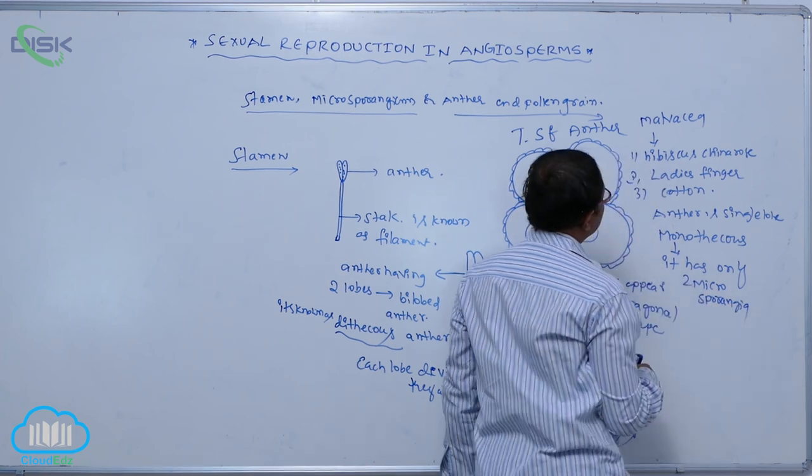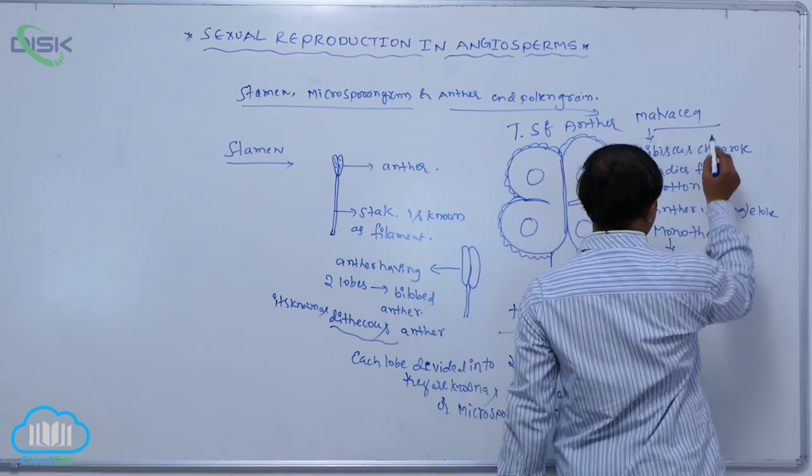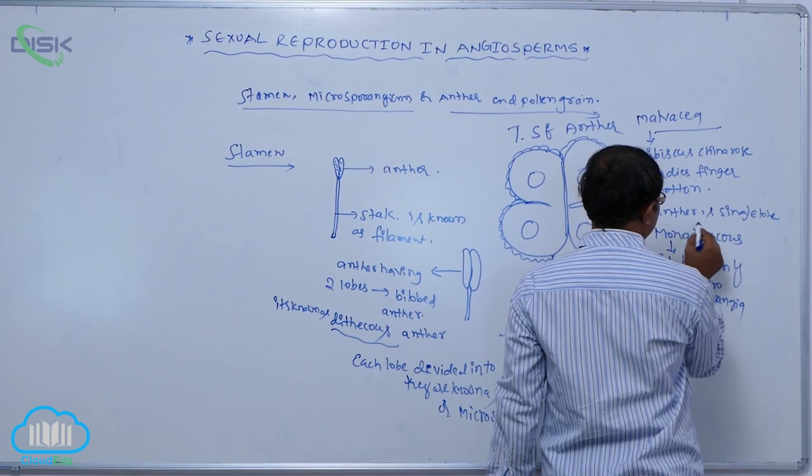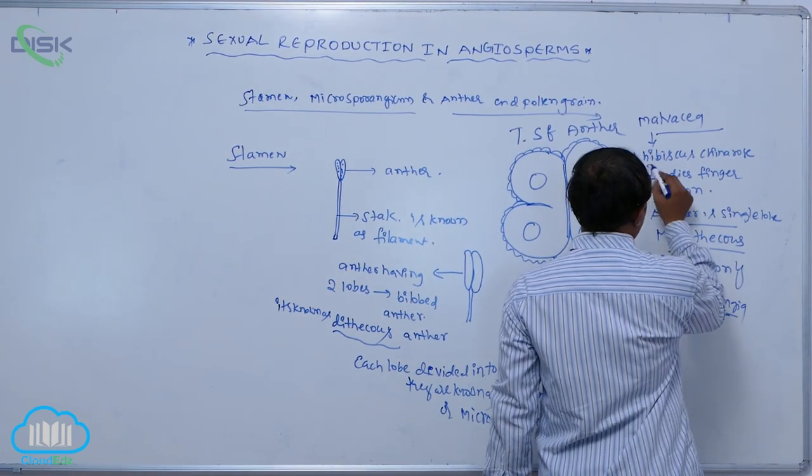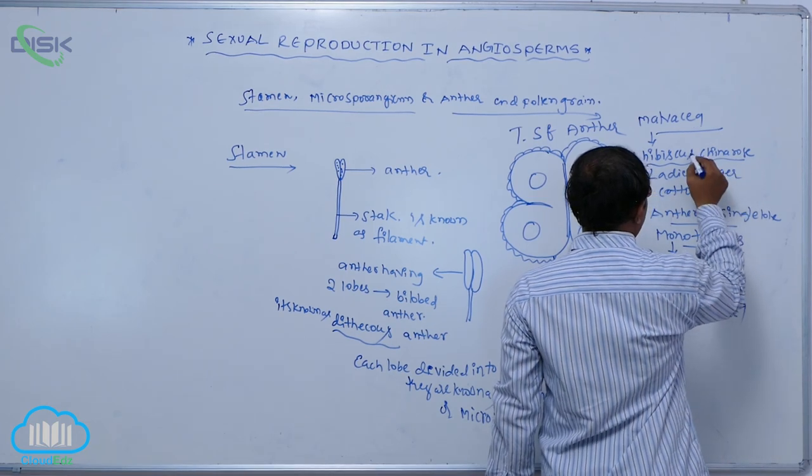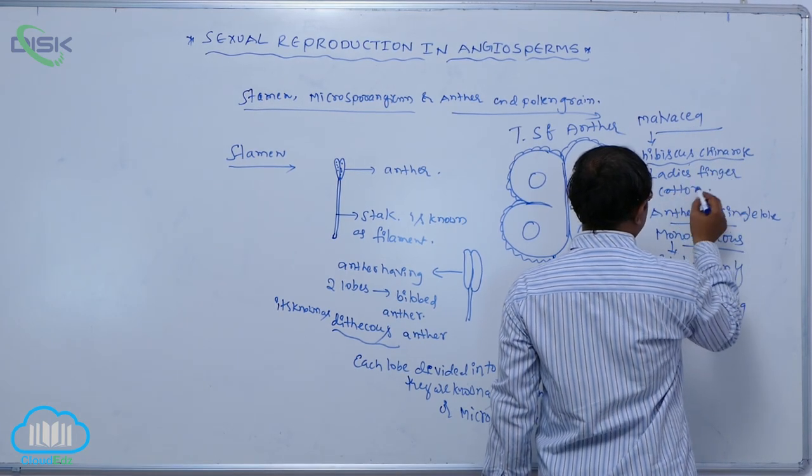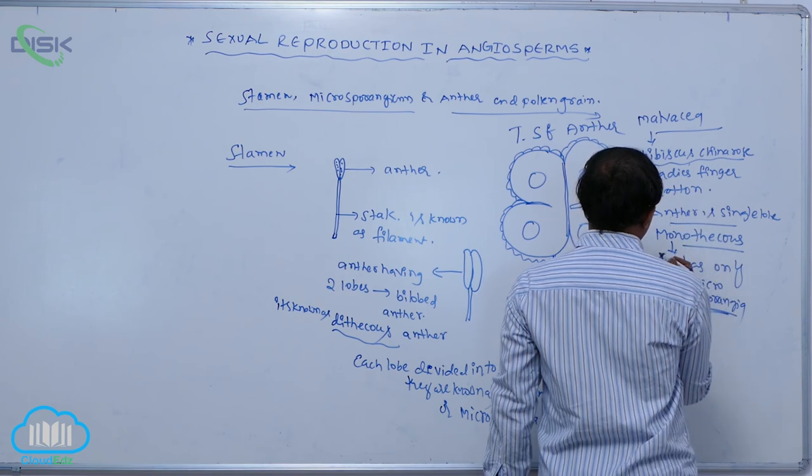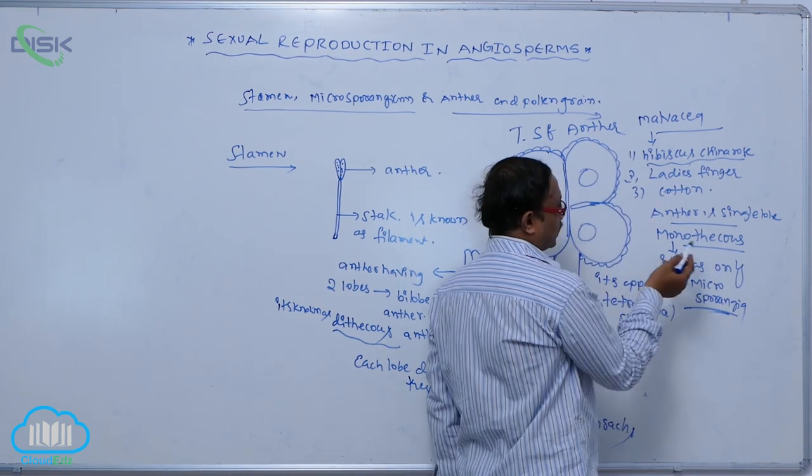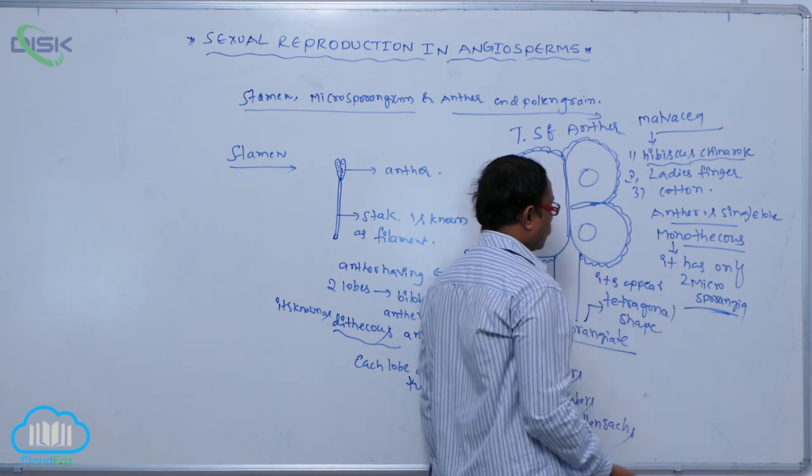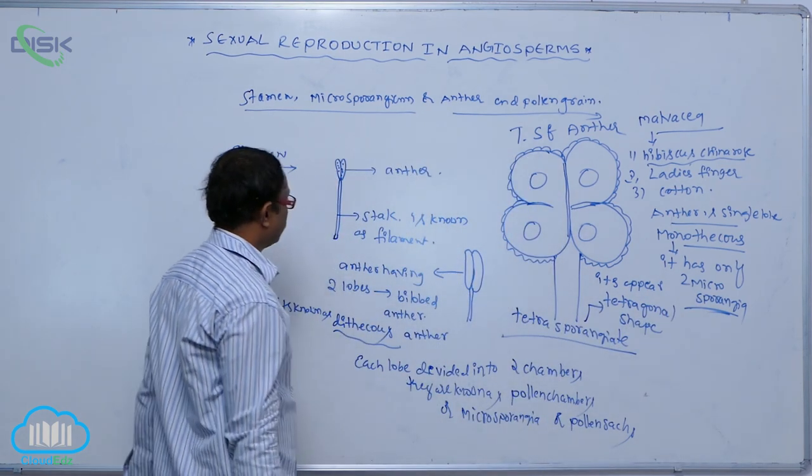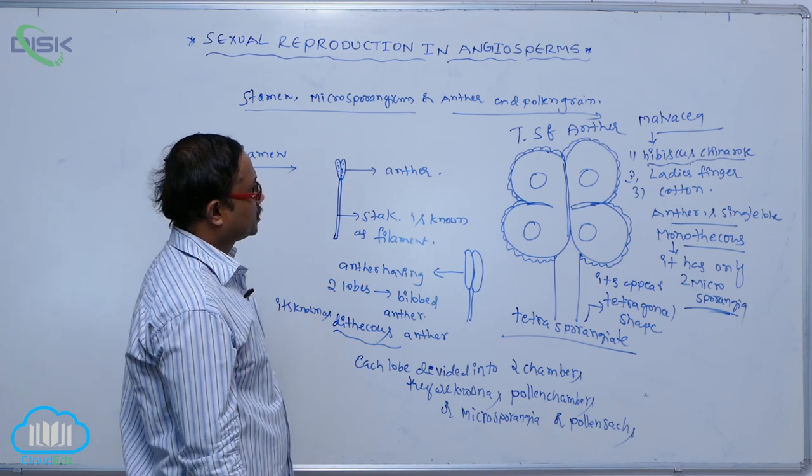Monothecous anthers have only two microsporangia. Hibiscus, commonly known as China rose, lady's finger, and cotton—all belonging to the Malvaceae family—have this single-lobed anther structure, meaning they have only two microsporangia. This is the structure of the stamen.